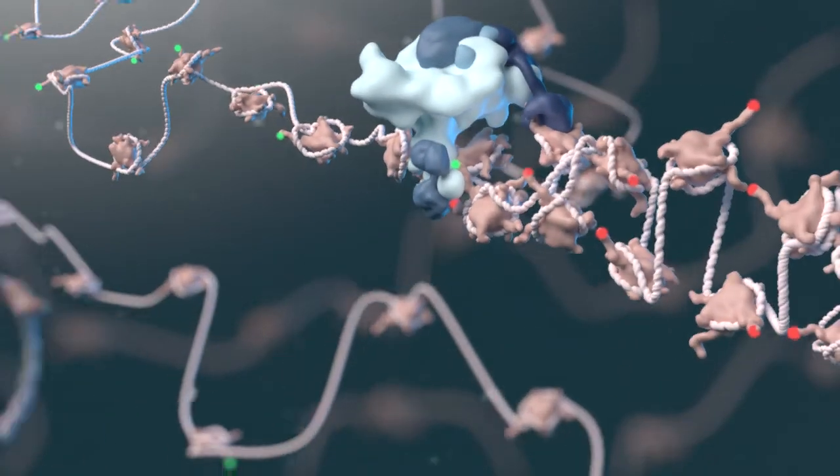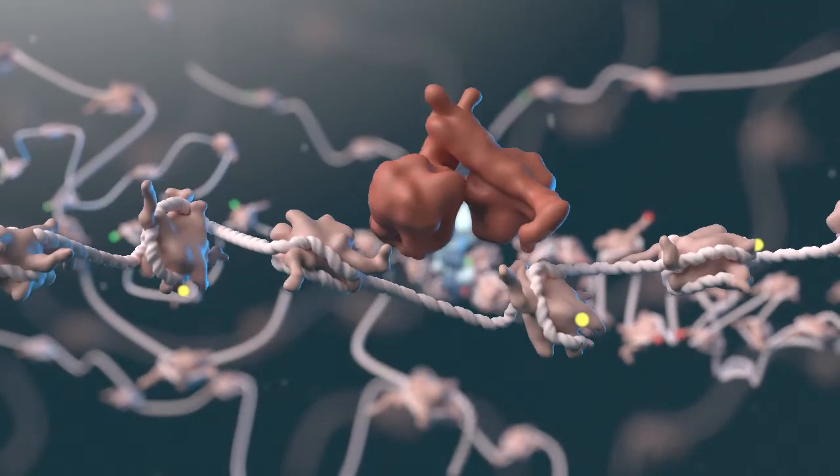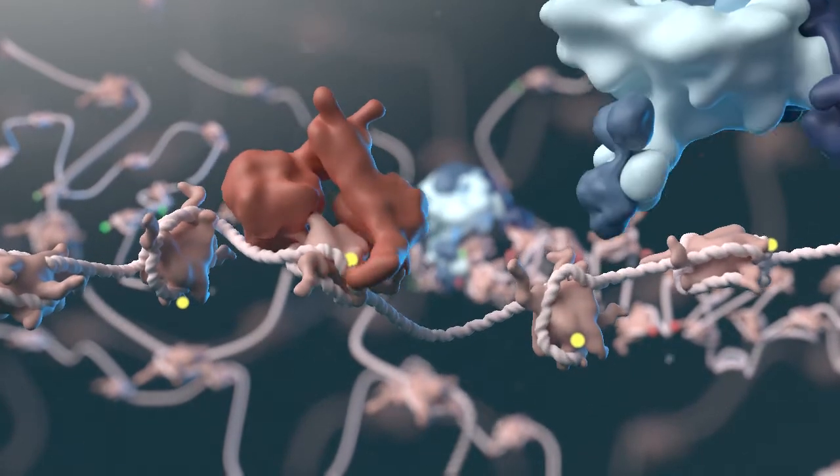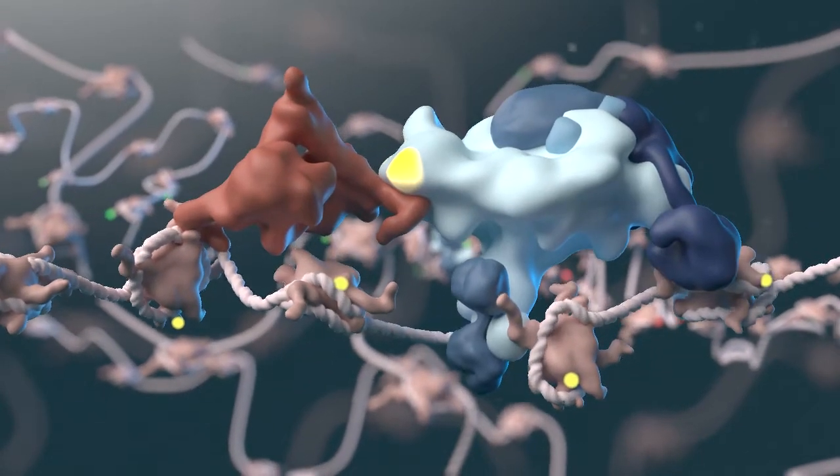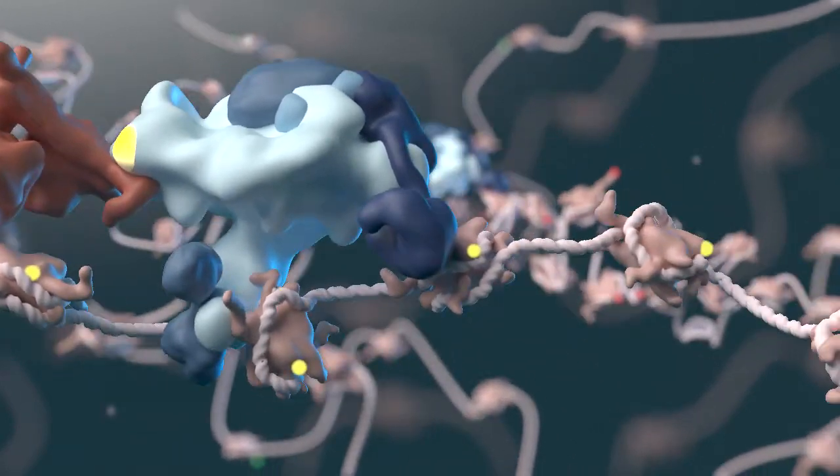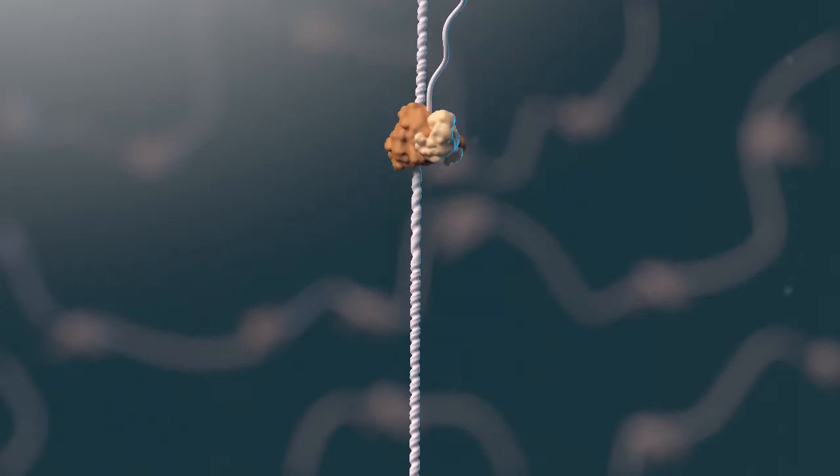Compass is recruited to chromatin by the histone 2a deubiquitinase and tumor suppressor BAP1, which interacts with the plant homeodomain or PHD found on MLL3. Together these proteins promote expression downstream of tumor suppressor regulated genes.